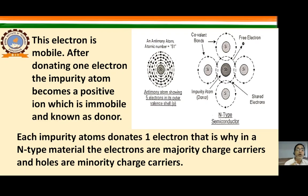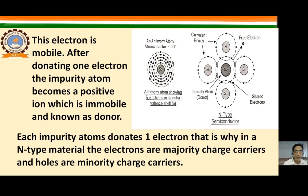The impurity atom is known as a donor atom. It has 5 electrons in its outer valence shell — for example, antimony has 5. Four electrons form covalent bonds with silicon, and the fifth electron is free to move. After donating one electron, the impurity atom becomes positively charged.